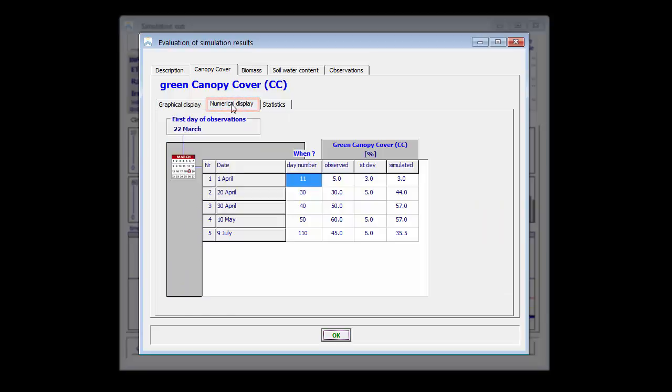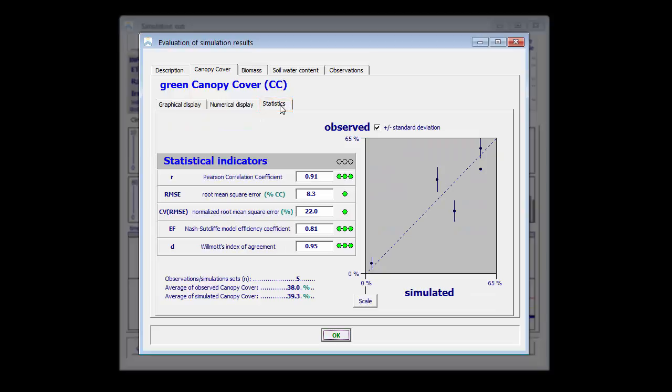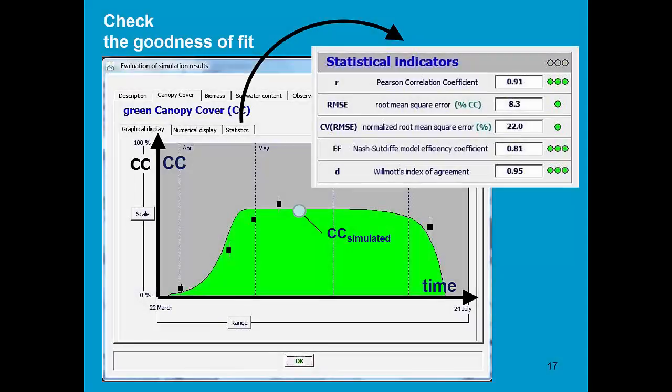I can see the values numerically, but I can also look at a statistical evaluation. I have several statistical indicators which shows me the goodness of fit between the observed and simulated data. The green dots show me the goodness of fit. The more dots there are, the better the fit. For poor matches, the dots will be red. By dragging the cursor over the value, AquaCrop shows me which values gives a perfect match. So in AquaCrop we have checked the goodness of fit.